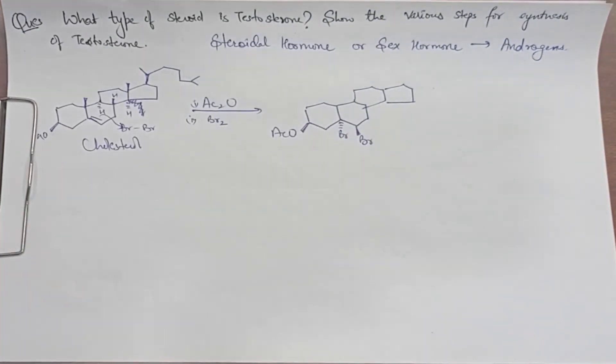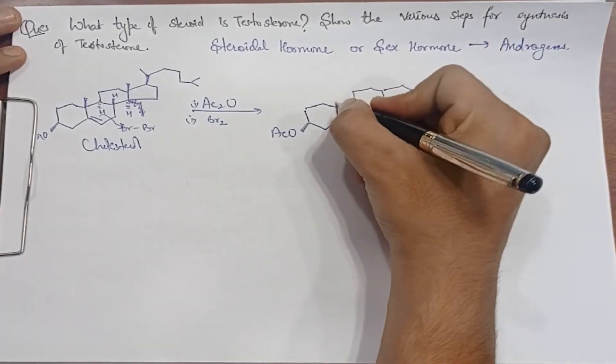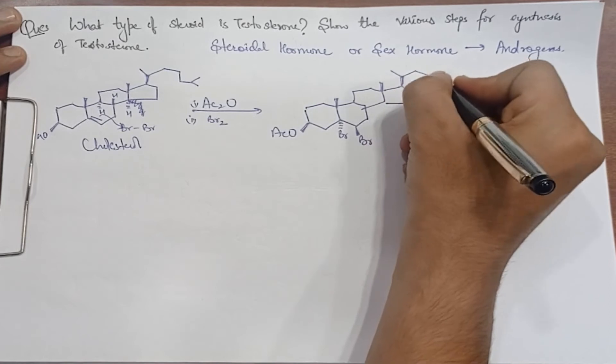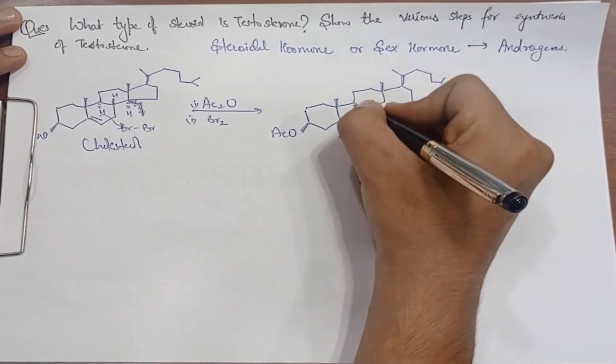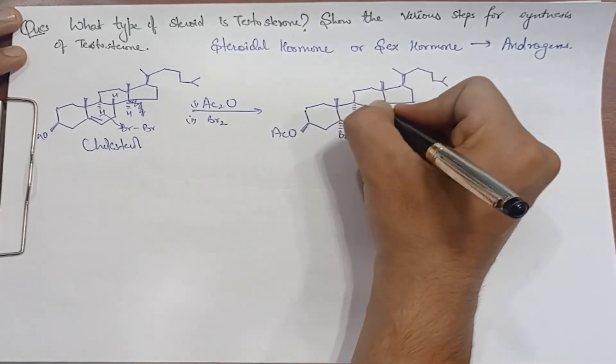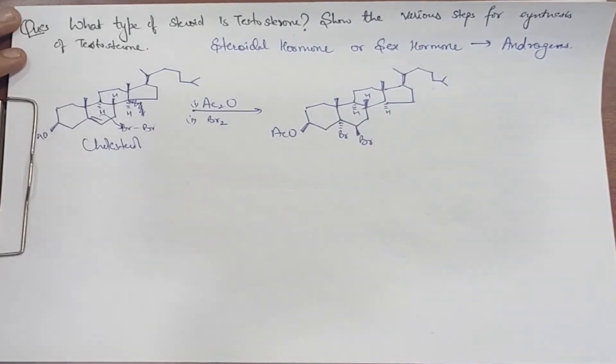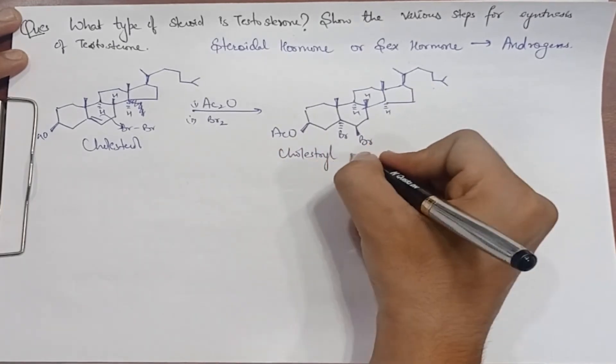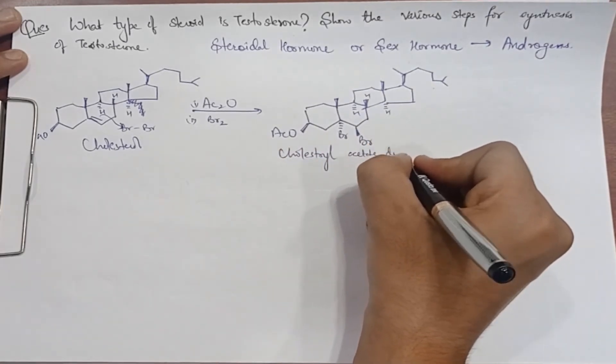Now see that structure: two angular methyl groups, one side chain, hydrogens complete. This is our cholesterol acetate dibromide.